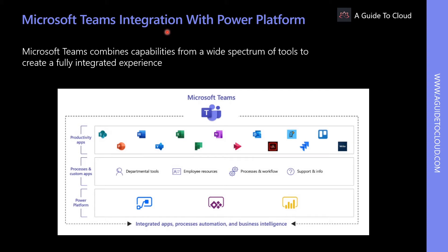Microsoft Teams is the hub for teamwork. The Microsoft Power Platform can augment this hub. Microsoft Teams groups all the information that users need for a particular context within various tabs in a channel. However, not all tasks can come fully formed out of the box. There will always be business or operational processes that are unique to an organization that require a tailored solution. This is where the Power Platform can come in to fill those gaps. Organizations can streamline business processes with Power Platform with tools like Power Apps and Power Automate.